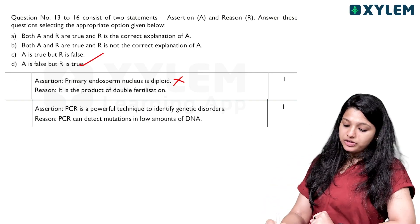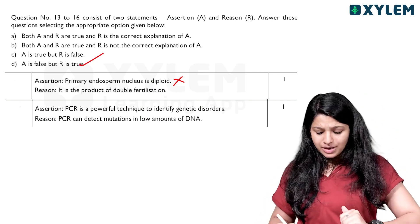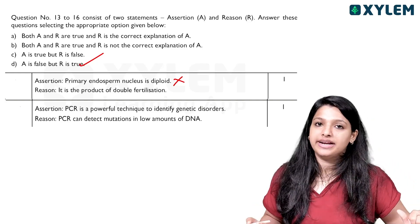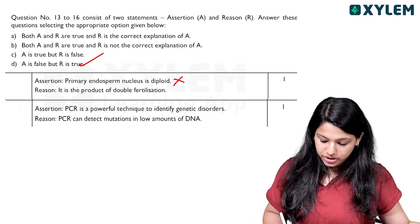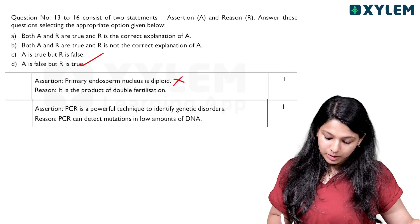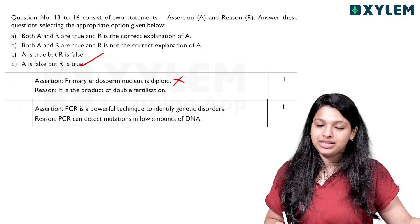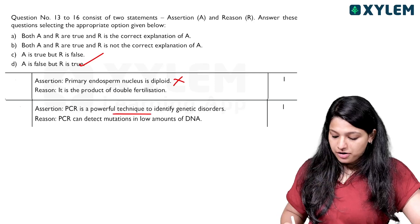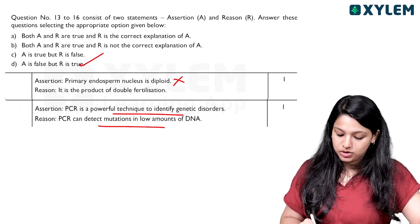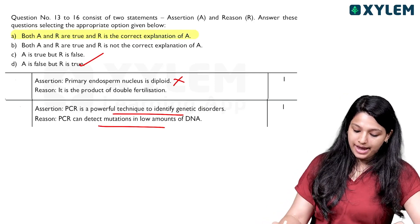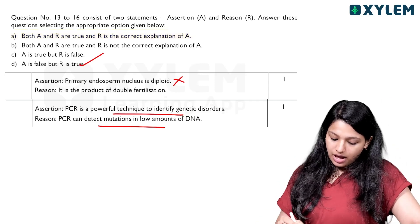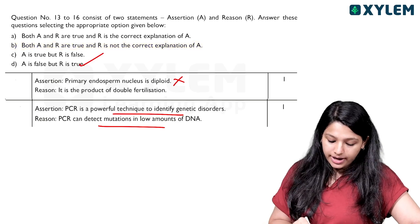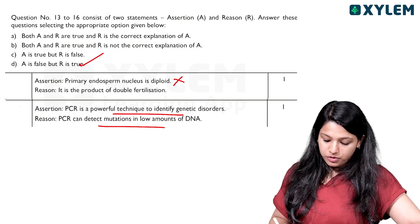PCR is a powerful technique to identify genetic disorders. PCR can detect mutations in low amounts of DNA. So A is true, but R is not the correct explanation of A — because if you want to see how mutations are identified, option A is true but the reason does not correctly explain it. Option C is correct.